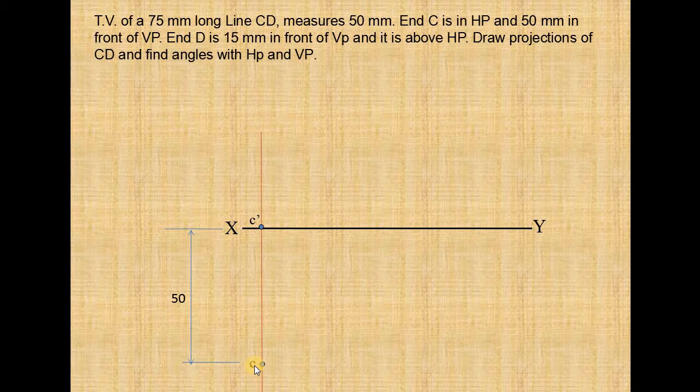Now draw a horizontal line through C of any length. Now you have to locate the end D. End D is 15mm in front of VP. At a distance of 50mm from XY, at the distance of 15mm, draw a horizontal line like this.